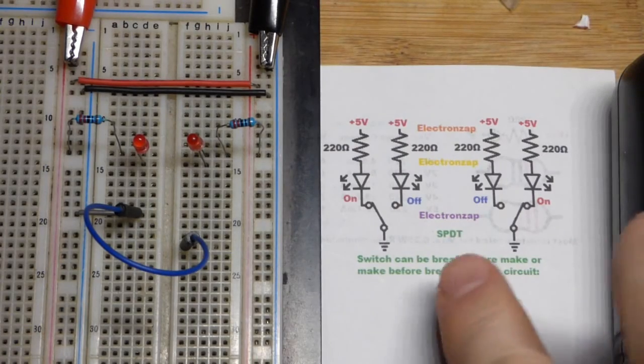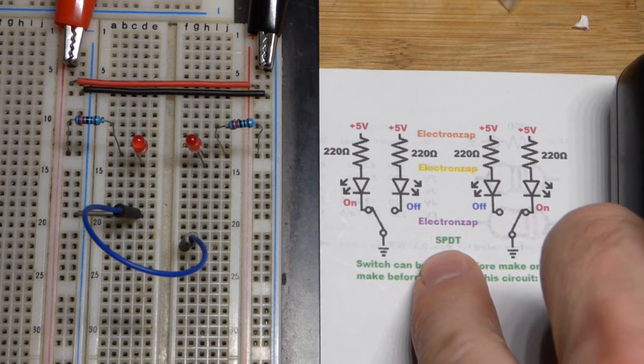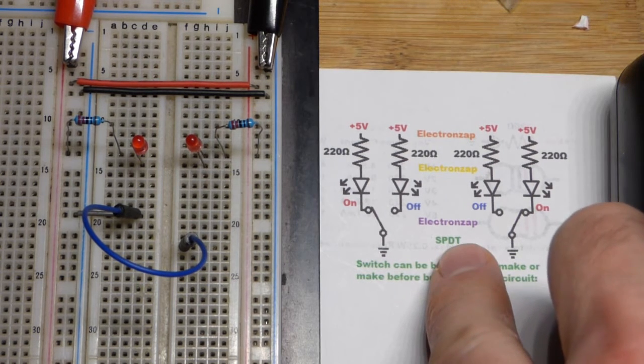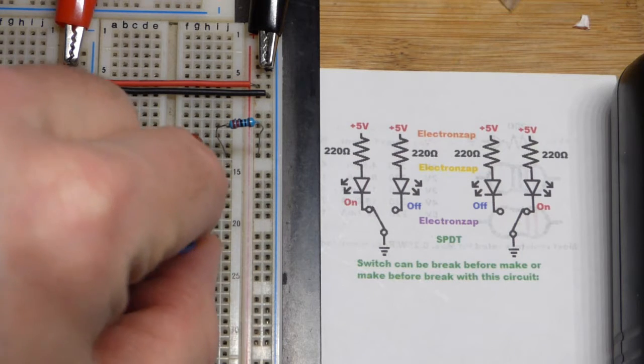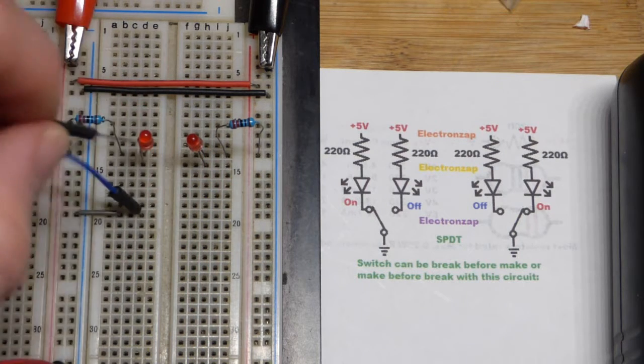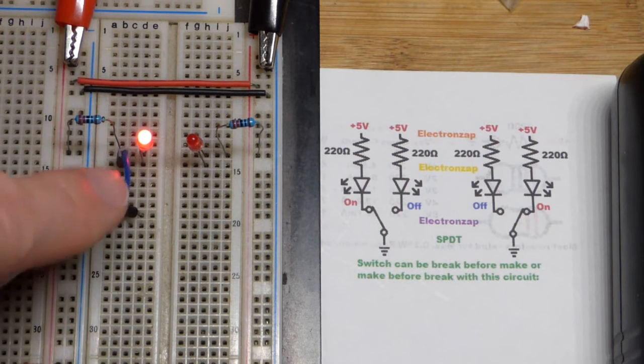So now for this video we have a diagram that I put together a while ago to give a visualization of what you got when you got a single pole double throw switch. In most cases you'll probably have it either in one position or the other and it may favor one position or the other.